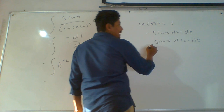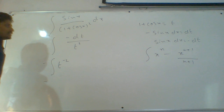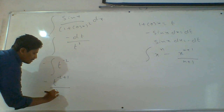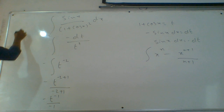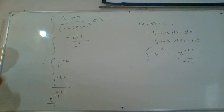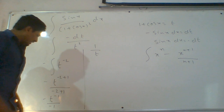The required formula is integral x power n: x power n plus 1 by n plus 1. For t power minus 2: t power minus 2 plus 1 by minus 2 plus 1 gives t power minus 1 by minus 1. The minus and minus cancel, giving t power minus 1 equals 1 by t.